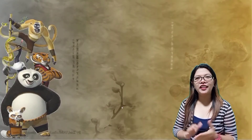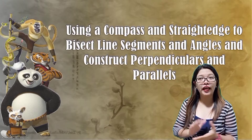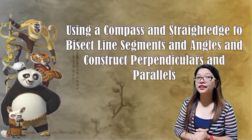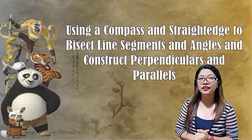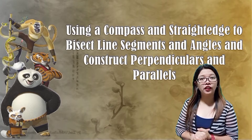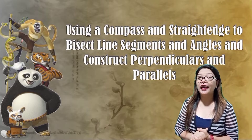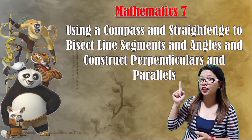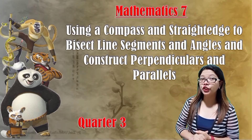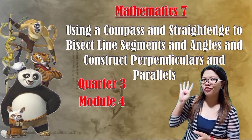Hi, Grade 7! For today, our topic is using compass and straightedge to bisect line segments and angles, and construct perpendiculars and parallels. It was based on Mathematics 7, Quarter 3, Module No. 4.